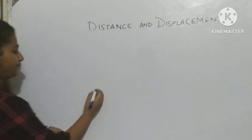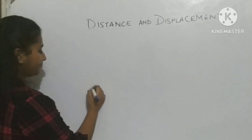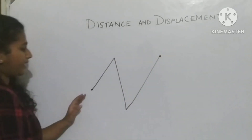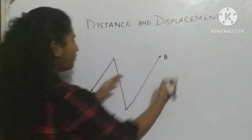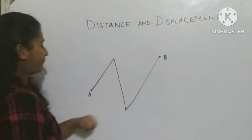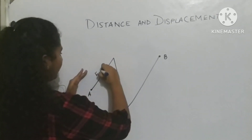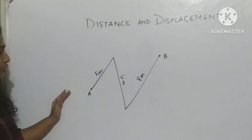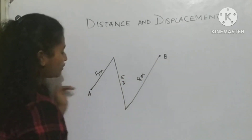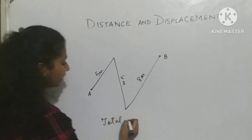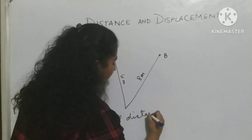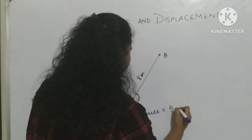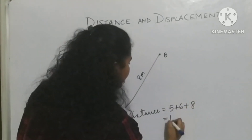Suppose a body is travelling from A to B. I take one segment as 5 meters, another as 6 meters, and another as 8 meters. The body has gone from A to B, so the total distance travelled is 5 plus 6 plus 8, which is 19 meters.